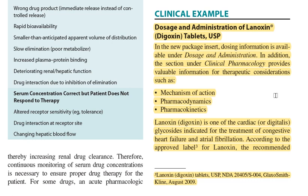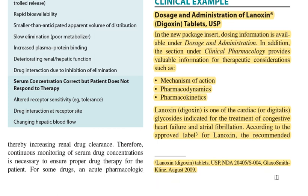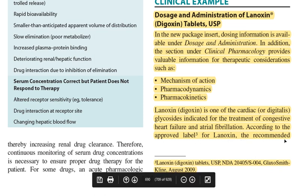Lanoxin or digoxin is one of the cardiac glycosides — digitalis glycosides — indicated for the treatment of congestive heart failure and atrial fibrillation. According to the approved label, Lanoxin tablet USP was approved under NDA (New Drug Application) by GlaxoSmithKline in August 2009. The package insert approved at that time carries specific dosing recommendations.